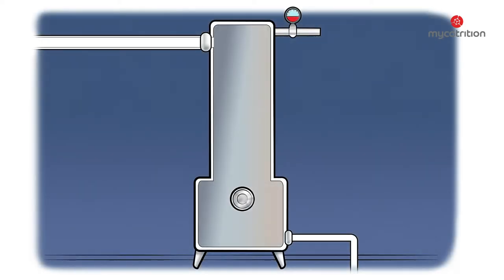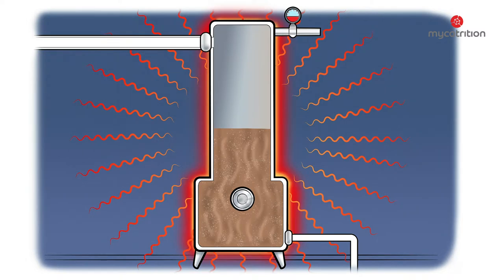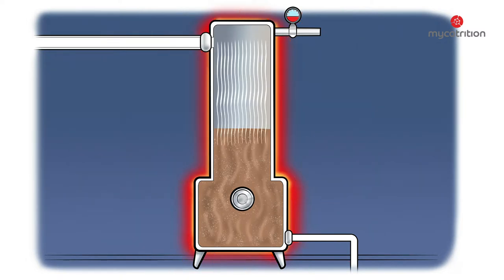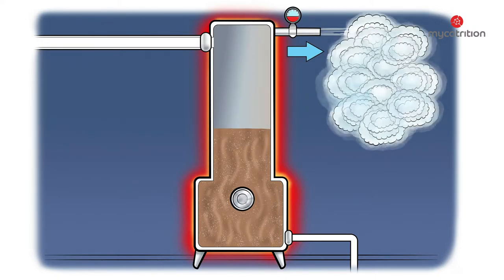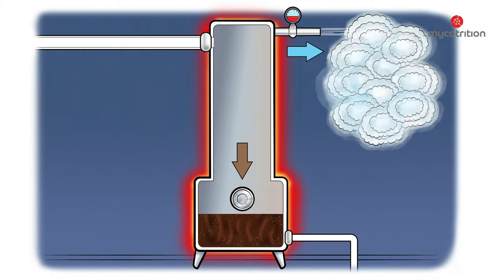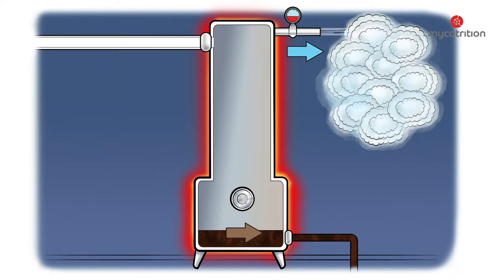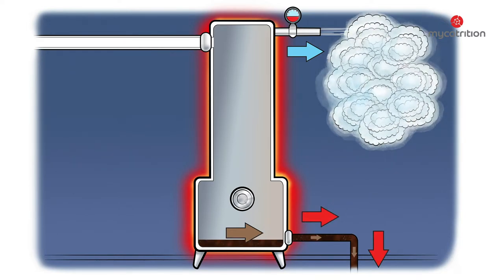In the next step, the extracted liquid is filled into a vacuum evaporator. Then the vacuum evaporator is heated. Thanks to the vacuum, the liquid begins to evaporate at low temperature. The emerging vapor is discharged through a relief valve. As more and more of the water evaporates, an even thicker and darker substance remains. At the end of this process, only about 10% of the original volume of extraction liquid remains in the vacuum evaporator.